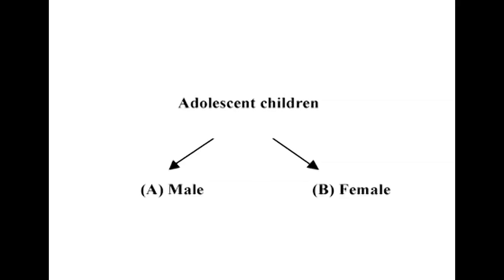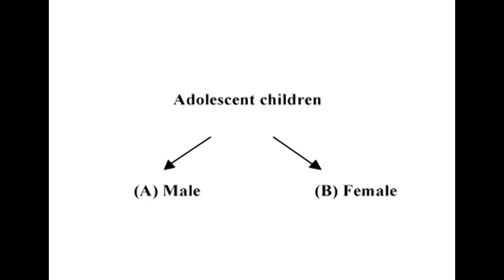The data can be classified according to attributes or qualities into simple classification and multiple classification. Simple classification, also known as classification according to dichotomy, is when data are divided into groups according to their qualities. For example, adolescent children classified as male and female.